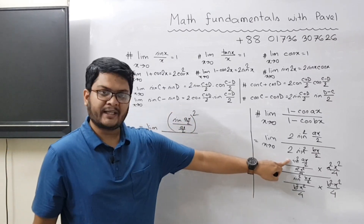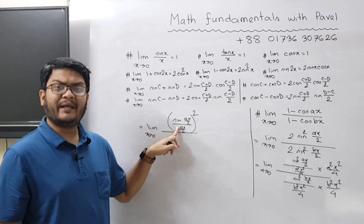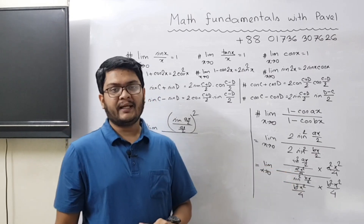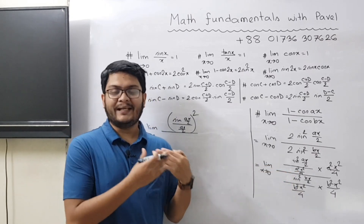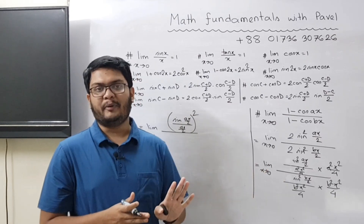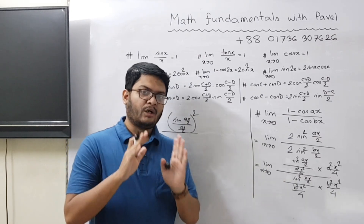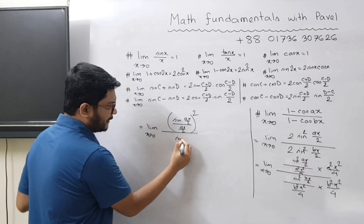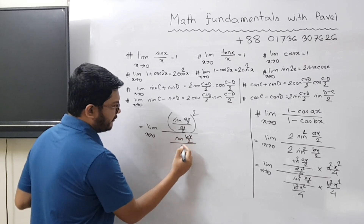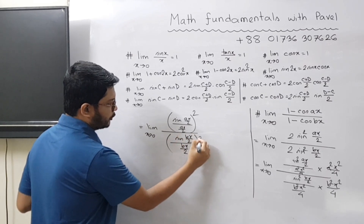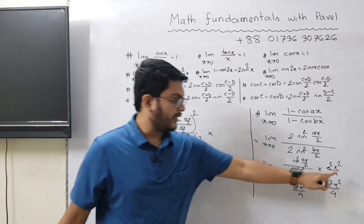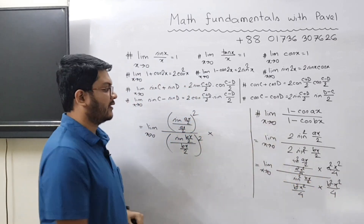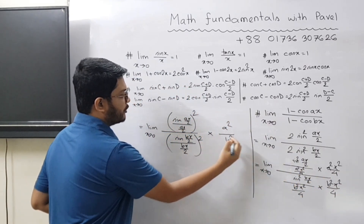We have sin²(ax/2) divided by (ax/2)² on top, and sin²(bx/2) divided by (bx/2)² on the bottom. The x squared terms and the 4s cancel out, leaving us with a clean ratio.